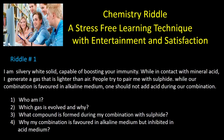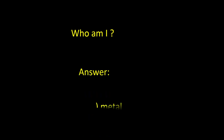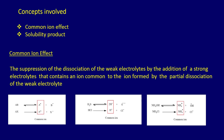Students might have guessed the answer to the primary question. The answer is: zinc metal. The riddle is framed to explain two basic concepts of chemistry — number one, the common ion effect, and number two, the solubility product.